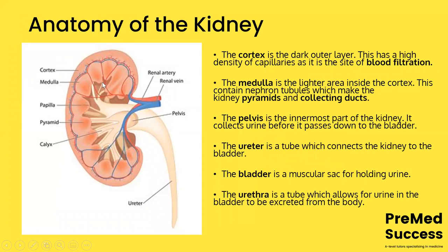The structure of the kidney itself: if you sliced a kidney, you'd see the cortex — the outer, darker, denser layer full of capillaries. Then the medulla — the lighter inner area where the nephron tubules and collecting ducts are. The renal pelvis is the innermost part, where urine is collected before passing down the ureter to the bladder.